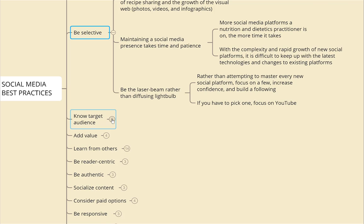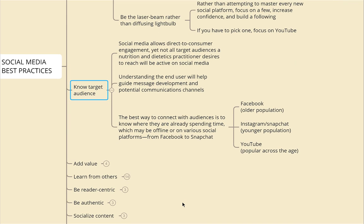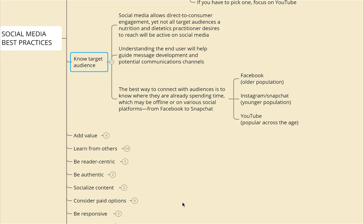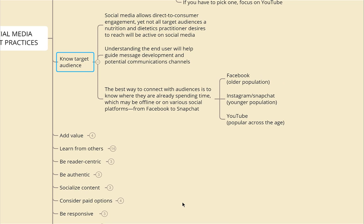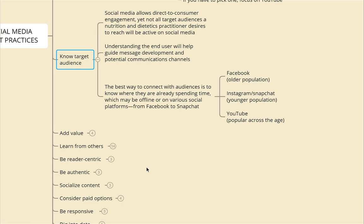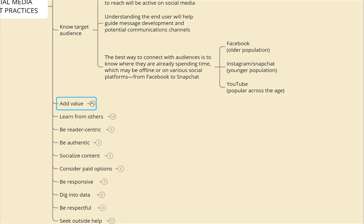Know your target audience. Not all audiences a practitioner desires to reach will be active on social media. Understanding the end user will guide message development and potential communication channels. The best way to connect with an audience is to know where they are already spending time. Facebook is good for older populations — say 40 and up. Instagram and Snapchat are great for younger audiences such as college students or high schoolers. YouTube is popular across all age groups, which is another reason to strongly recommend it.